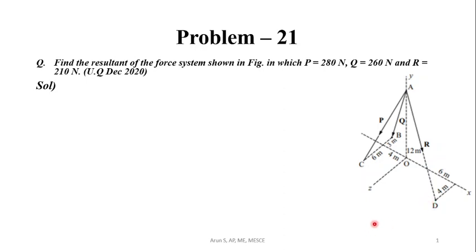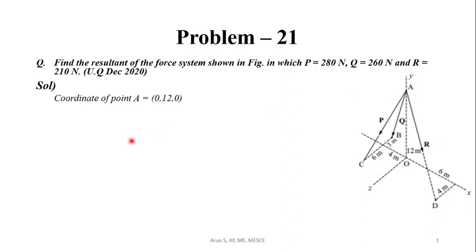First, we have to find the coordinates of points A, B, C and D from the given figure. Point A is lying along the Y axis, and this is our origin. The Y axis is at a height of 12 meters. Point A is lying on the Y axis, so the X coordinate and Z coordinate are 0. The coordinate of A will be (0, 12, 0).